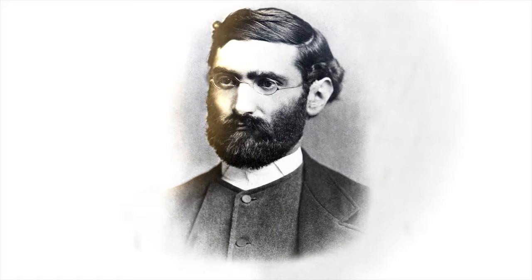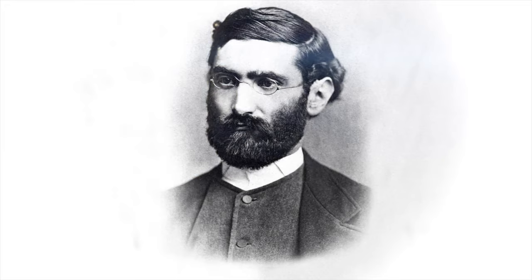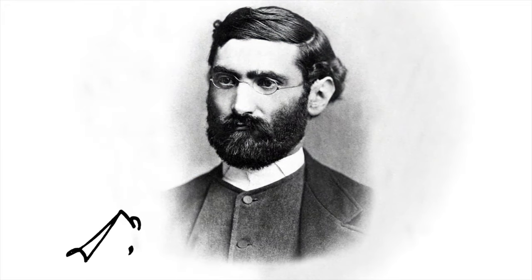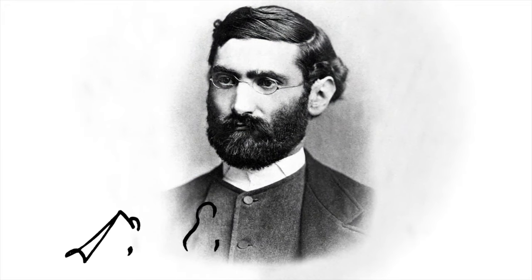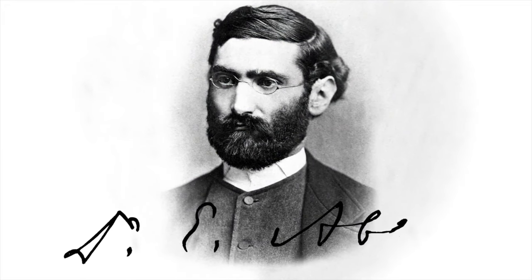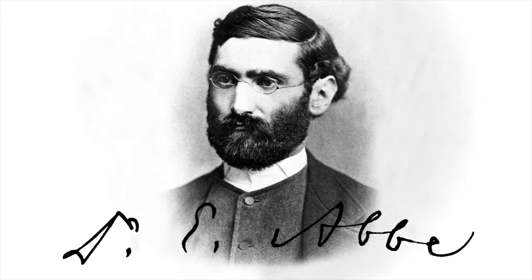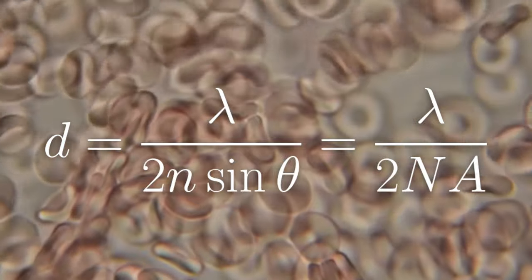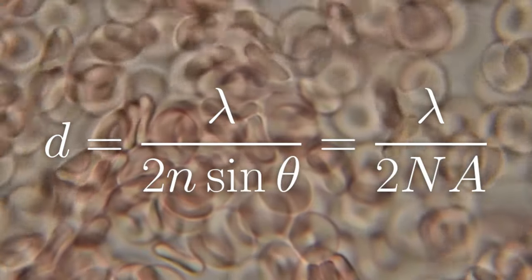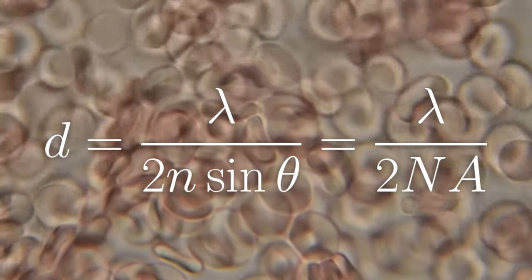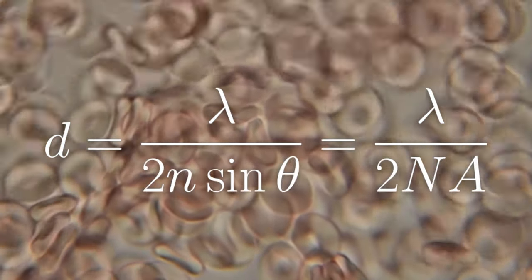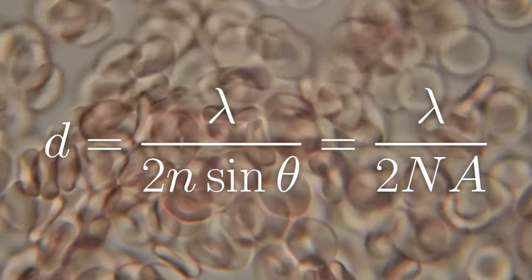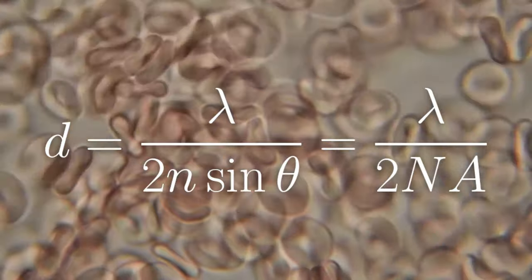This restriction was named after the German scientist Ernest Abbe, and is called the Abbe diffraction limit. It allows you to get the minimum resolution value not only for visible light, but also for any other electromagnetic wave. Light is also an electromagnetic wave.